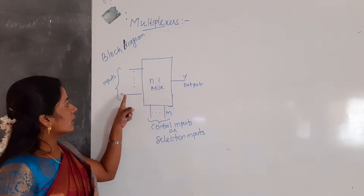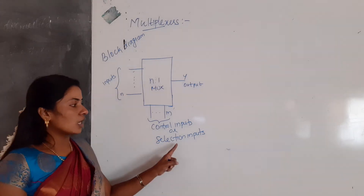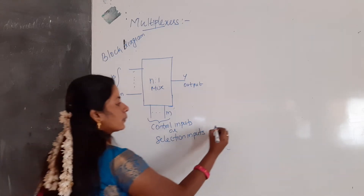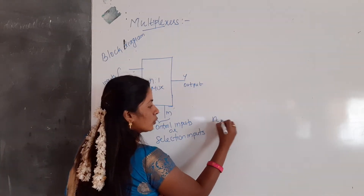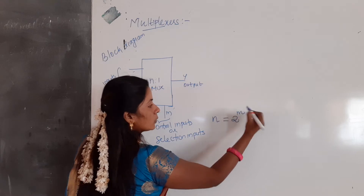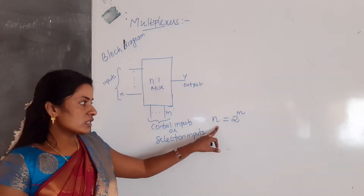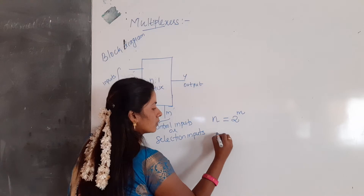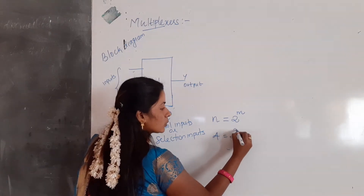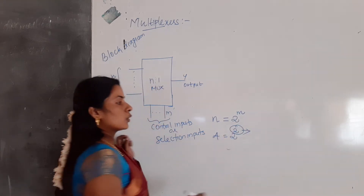The relationship between inputs and the selection input is: N equals 2 to the power M. For example, if the number of inputs are 4, how many control lines do we need? We need 2 control lines.